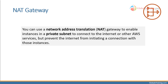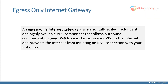But what if the components within your subnet want to access the internet — let's say to download security patches — but do not want anyone from the internet to access the components? That is where NAT gateway comes in handy. You can use a network address translation gateway to enable instances in a private subnet to connect to the internet or other AWS services.